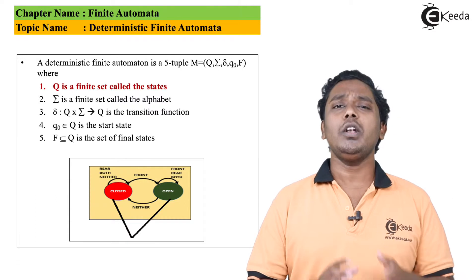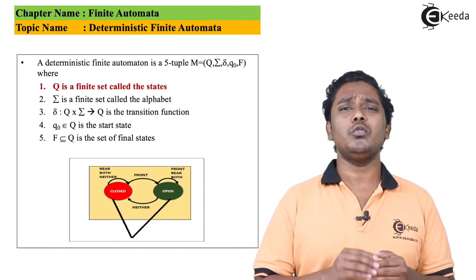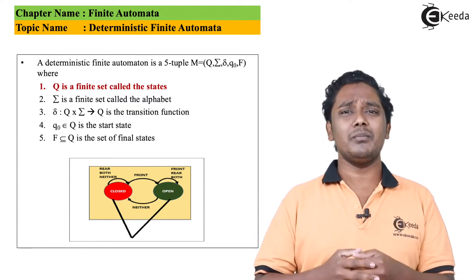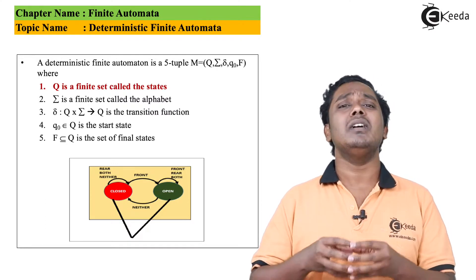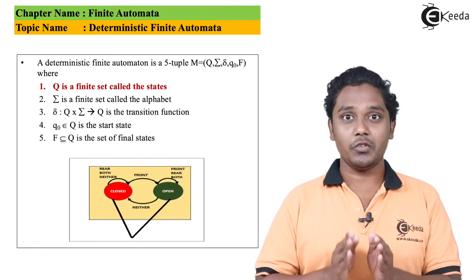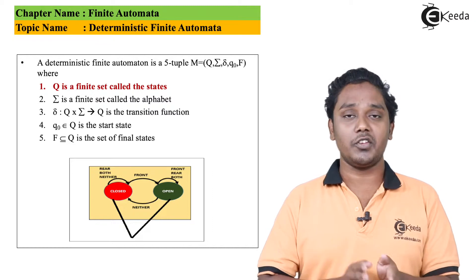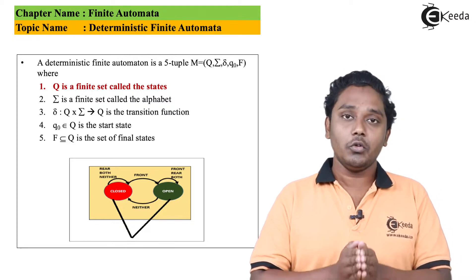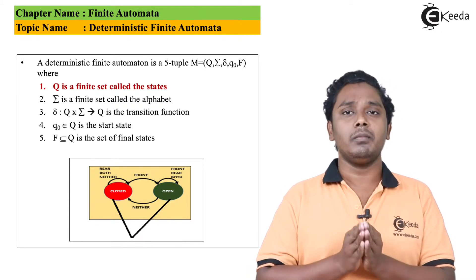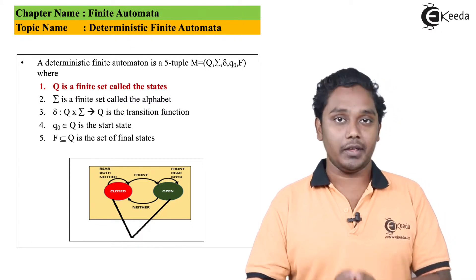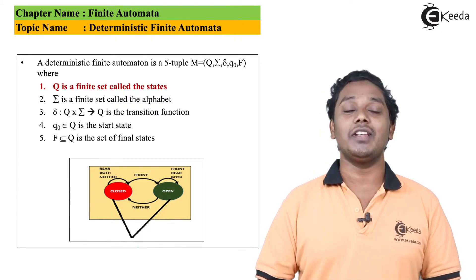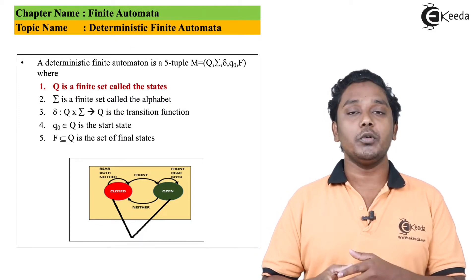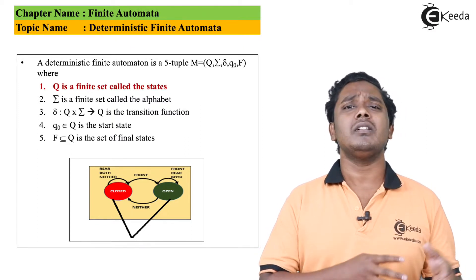The first component Q is a set of finite number of states. As we saw in the example, states are used to remember information. Whatever the DFA is remembering, it remembers using the state — the state constitutes the memory part of the DFA. The second component Σ (sigma) is called the alphabet. Just as various languages have various alphabets, a computing model has something called an alphabet.